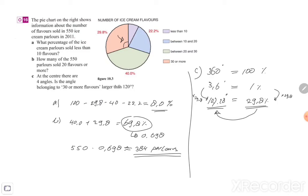So the question is, is the angle belonging to 30 or more flavors larger than 120 degrees? Then the answer, conclusion: no, because it is less than 120 degrees.